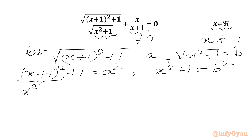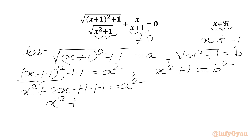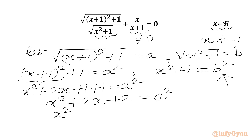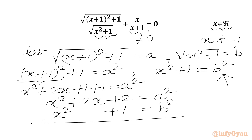Using the (a+b)² formula, we get x² + 2x + 1 + 1 = a², or x² + 2x + 2 = a². Now we subtract the second equation from this: x² + 1 = b². Cancelling x², we get 2x + 1 = a² − b².